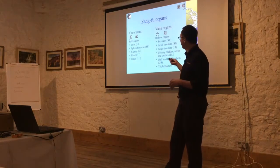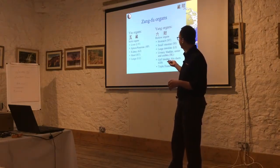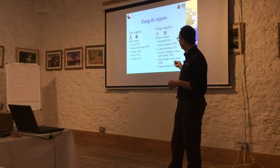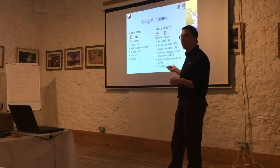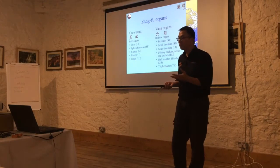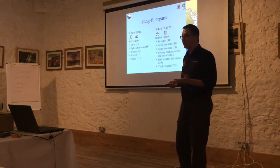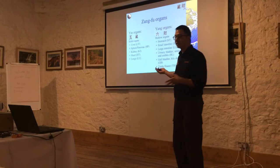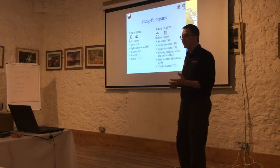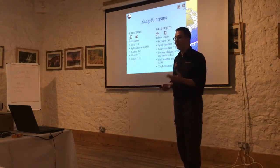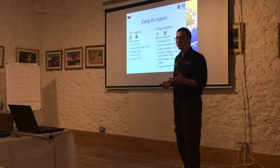We're talking about five of the yin organs and six of the yang organs — the solid organs and the hollow organs. The yin organs are the liver, spleen, kidney, heart, and lungs. For the hollow yang organs: the stomach, small intestines, large intestines, the bladder, the gallbladder, and the triple heater, which is found in the chest.